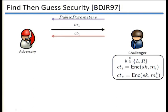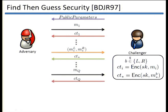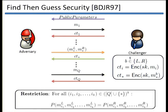The challenger responds with the ciphertext of the message, and this continues as long as the adversary wants. At only one point, the adversary is allowed to make a challenge query containing two messages. Depending on the bit B, the challenger returns the correct ciphertext — either the left or the right. After that, the adversary makes another single-message query phase. We have to impose a similar restriction on the left and right sequences, which consist of single messages, the left or right challenge message, and the single messages after the challenge pair.